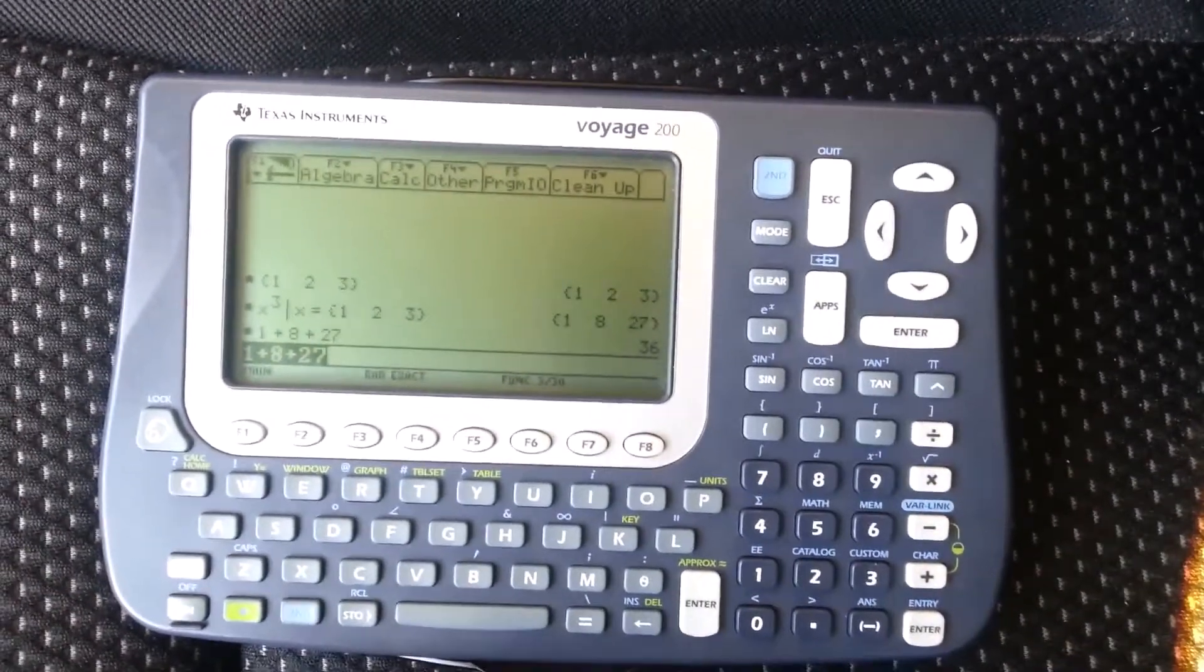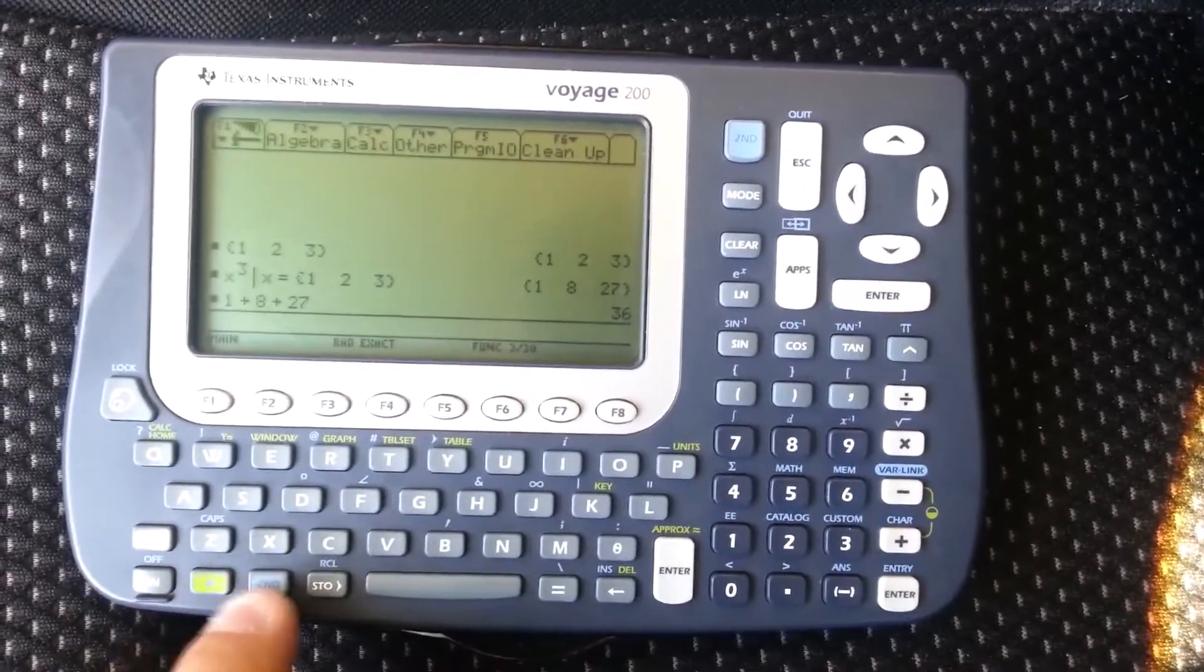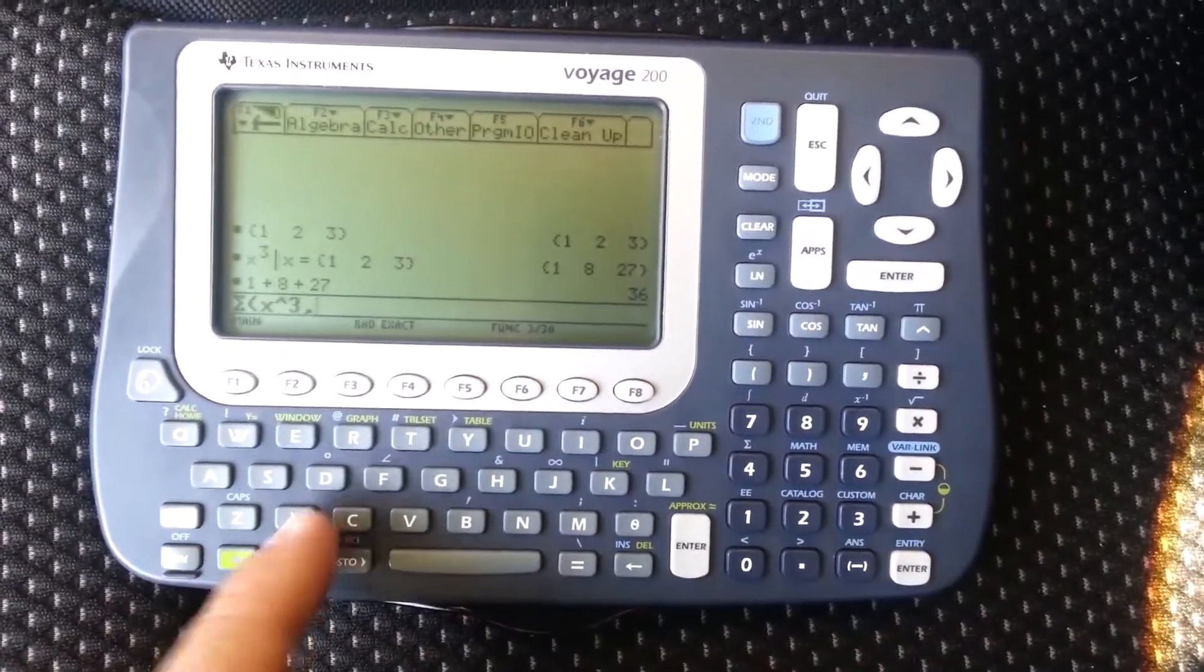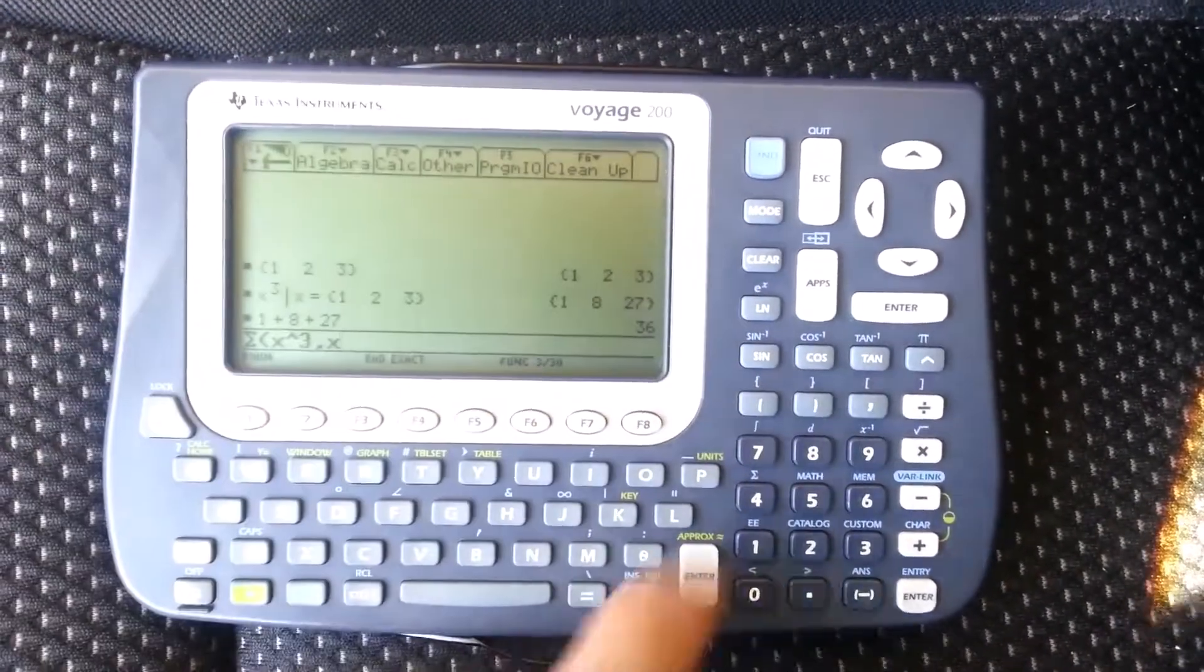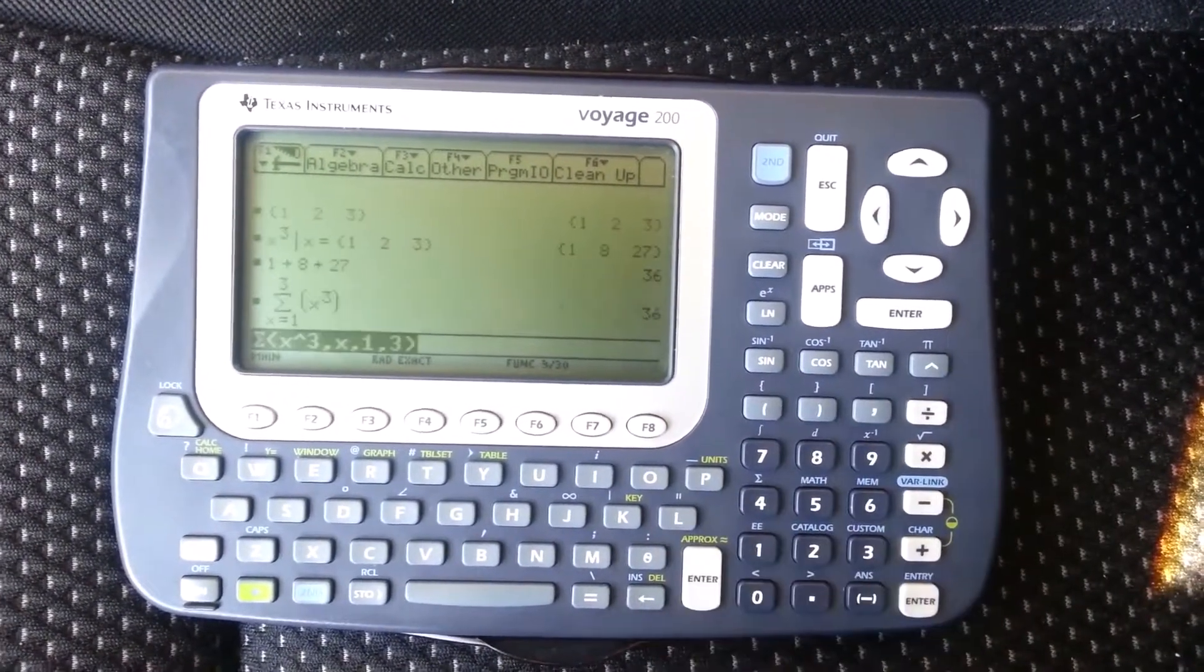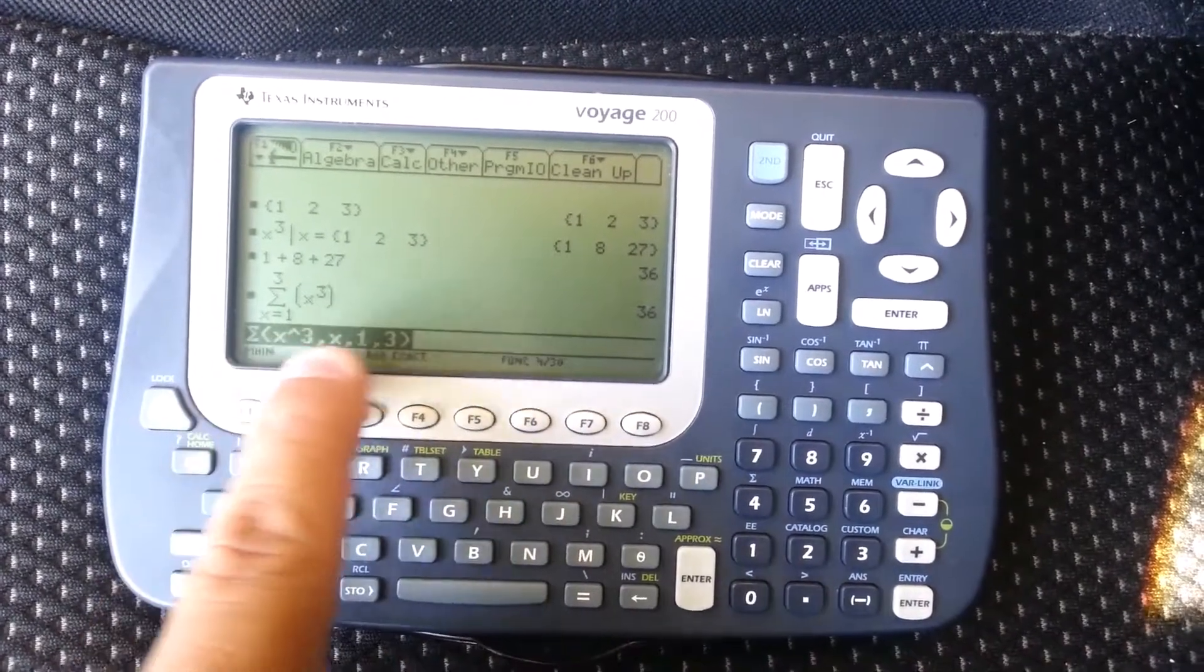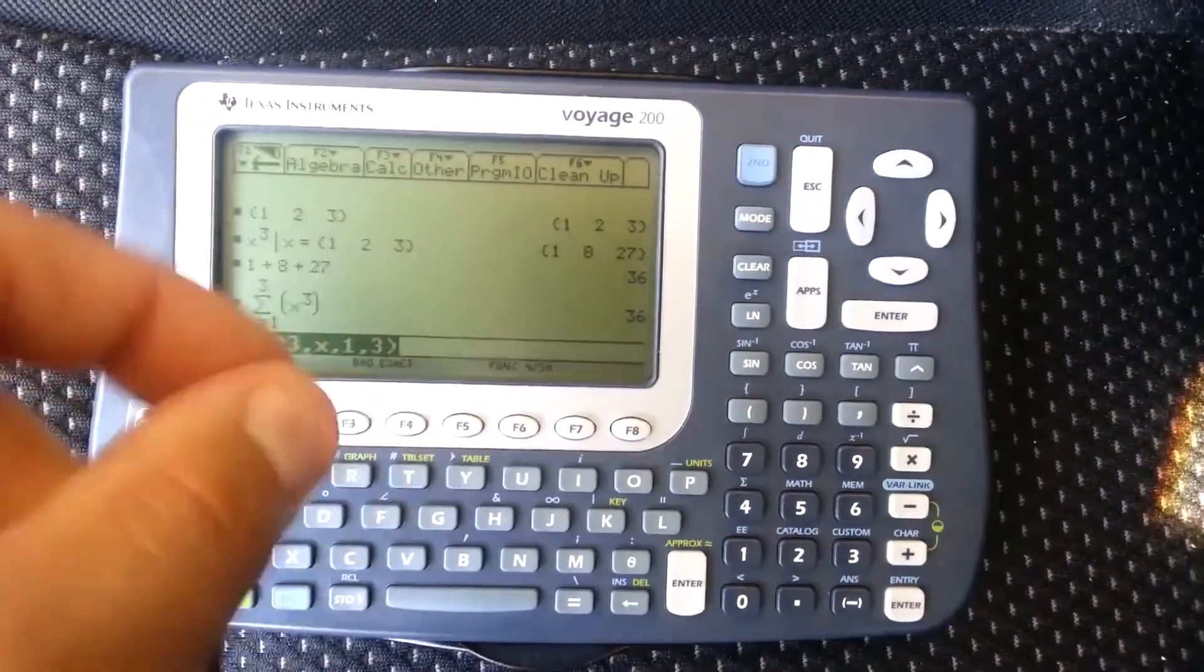Now you can do it on this calculator by doing the sum symbol and do x cubed. You have to tell it what variable you're summing over because expressions can have more than one variable. So I'm summing with respect to x from one to three, and that'll give you 36. I'll also write it in what Texas Instruments calls pretty print. Instead of writing it like this, if you have pretty print on, it'll write it like this, how you would actually write it by hand.